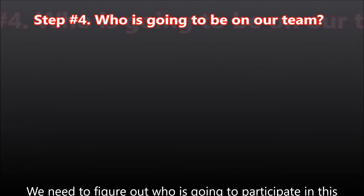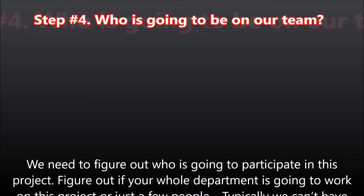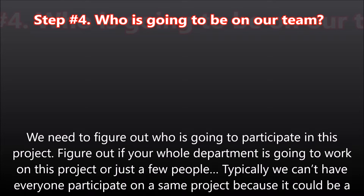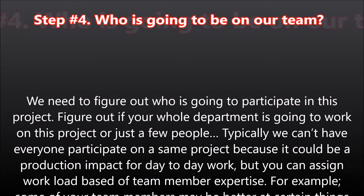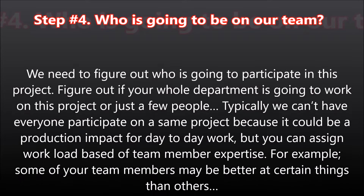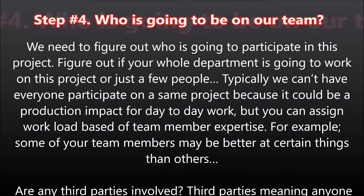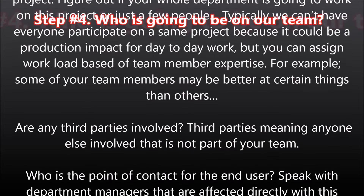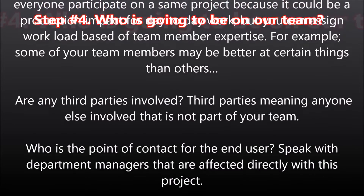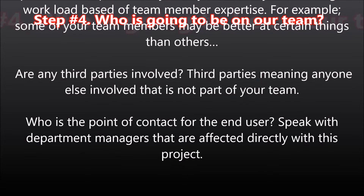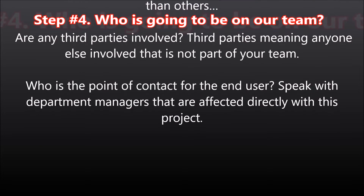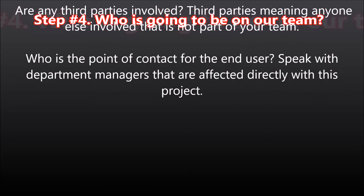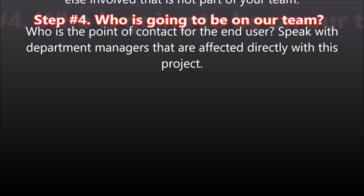Step number four: who is going to be on our team? We need to figure out who is going to participate in this project. Determine if your whole department will work on it or just a few people. Typically we can't have everyone participate because it could impact day-to-day work, but you can assign workload based on team member expertise. Are any third parties involved — anyone not part of your team? Also identify who is the point of contact for the end user, and speak with department managers directly affected by this project.